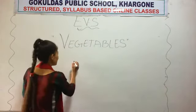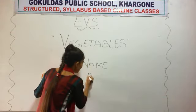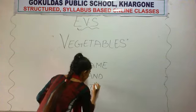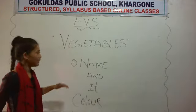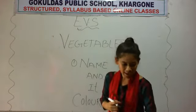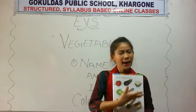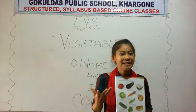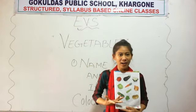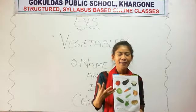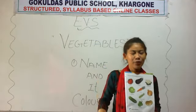We are going to learn a few vegetable names and their colors. We are having so many vegetables. These all are vegetables. They are the same category but they have different names and different colors. Though they all are vegetables, they have their own name and their different colors.